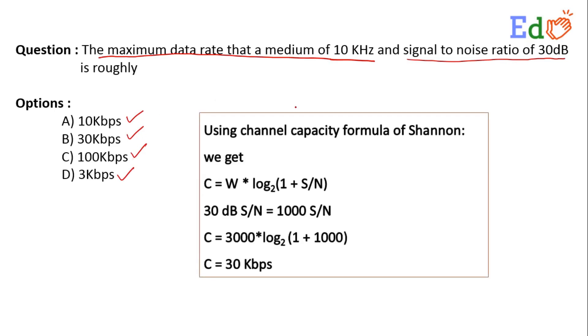Now we shall consider Shannon's formula. We get that C is equal to W into log of 1 plus S/N to the base 2. And we know that 30 dB S/N signal to noise ratio is equal to 1000 S/N.